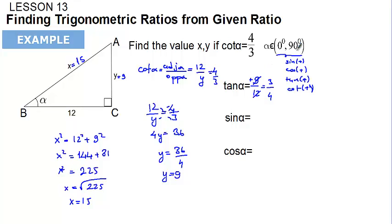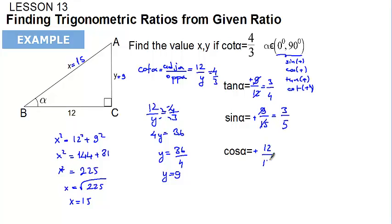This is going to be positive because the angle is in the first quadrant. Sine alpha equals the opposite side over the hypotenuse, which is 9 over 15. Simplifying by 3 gives 3 over 5. Cosine alpha is 12 over 15, and simplifying by 3 gives 4 over 5.